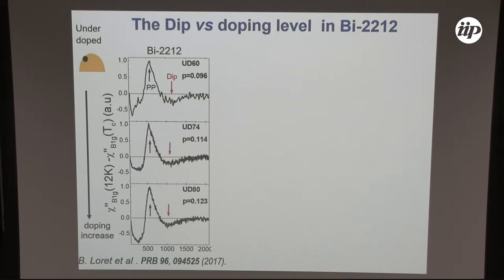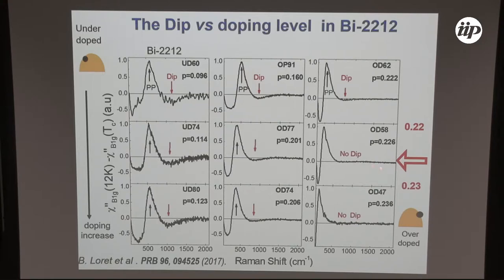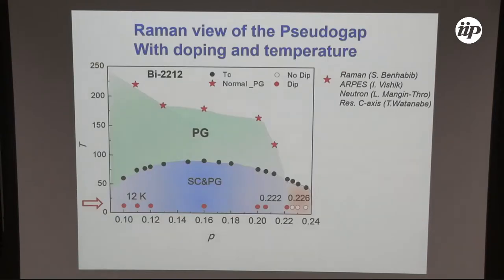Our goal is to track the dip inside the superconducting state at 12 Kelvin and determine at which doping level the dip disappears, which corresponds to the doping for which the pseudogap collapses. We performed Raman measurements in Bismuth-2212 at low temperature, increasing the doping. We can see the dip at lower dopings, and for higher doping levels the dip disappears in between 22% and 22.3% hole doping. The red color on the map corresponds to observation of the dip, and the white circle corresponds to its disappearance.